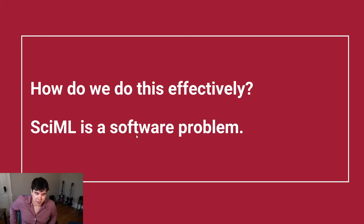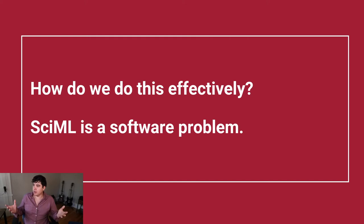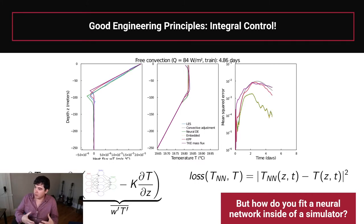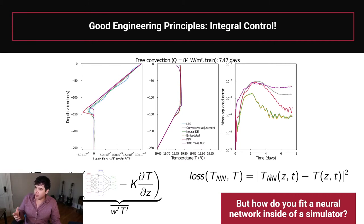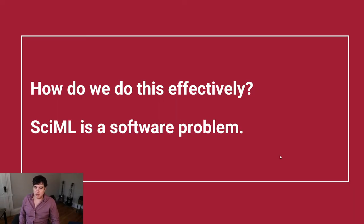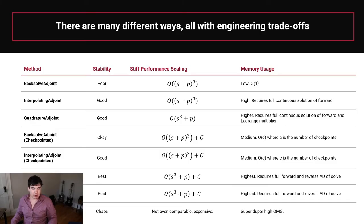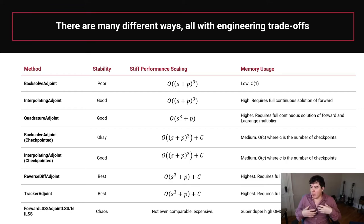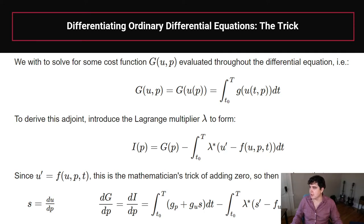Let's talk about performance. How do we differentiate a simulator to be able to performantly fit neural networks defined inside a simulation environment? Last time, I left you with the case where the best way to fit neural networks within universal differential equations was to have the entire simulation process be part of the loss function. That necessitates being able to calculate gradients of a simulation.